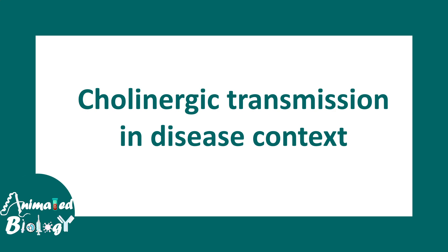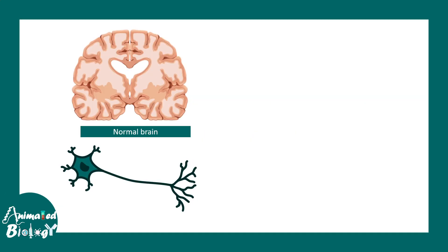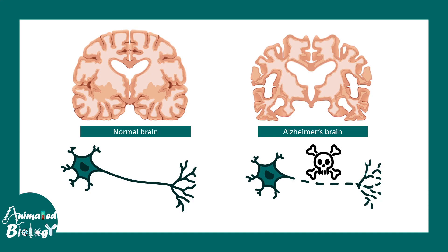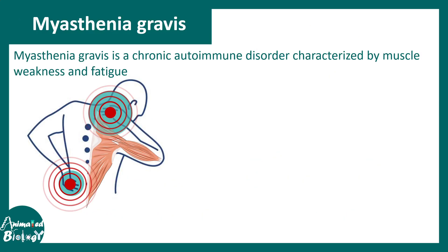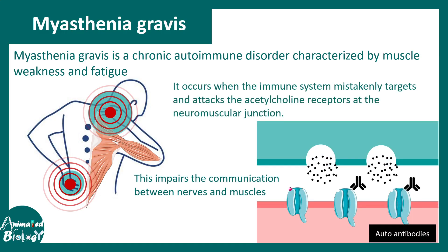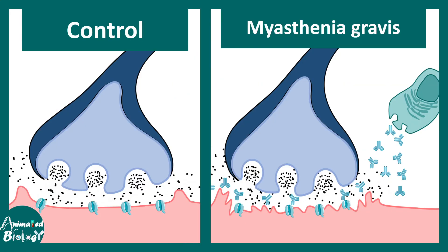Now let's talk about cholinergic transmission in a disease context. In Alzheimer's disease, cholinergic neurons are the ones that die. In myasthenia gravis, which is an autoimmune disorder characterized by muscle weakness and fatigue, the postsynaptic cholinergic receptors are targeted by autoantibodies. B cells mistakenly produce these autoantibodies against acetylcholine receptors, leading to muscle damage and weakening of the neuromuscular junction.